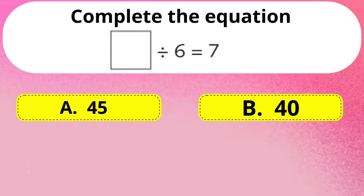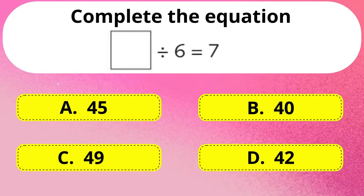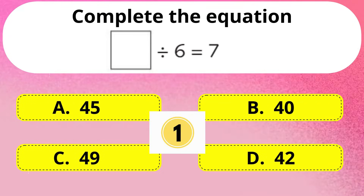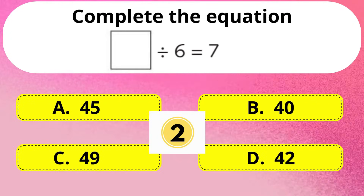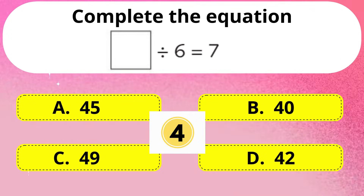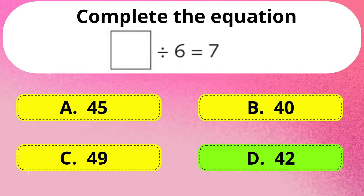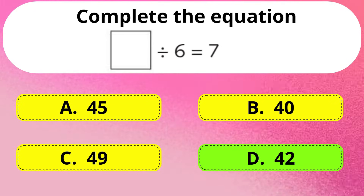Next question. Complete the equation: dash divided by 6 is equal to 7. The correct answer is Option D: 42.